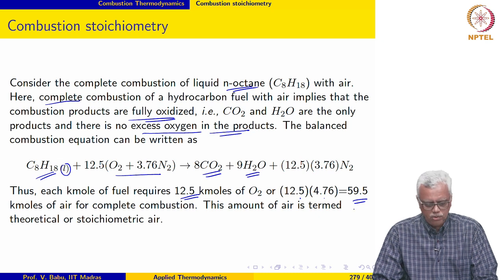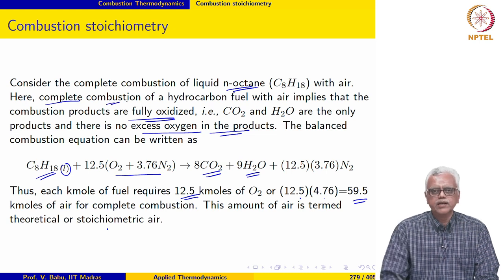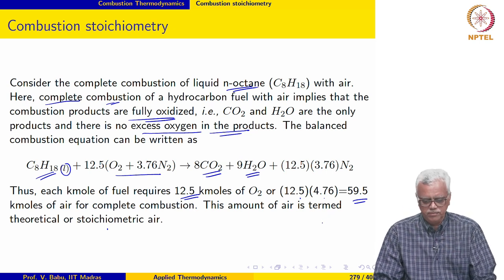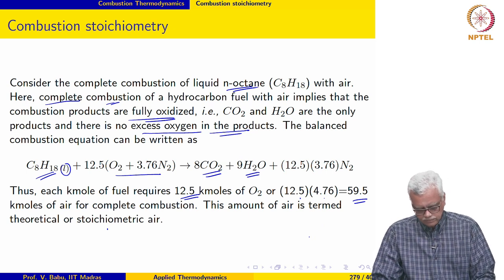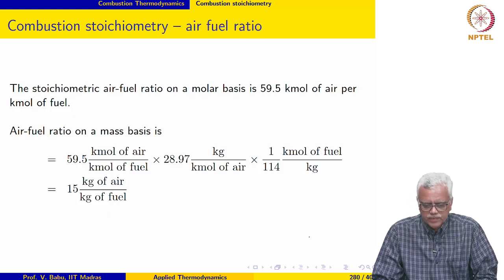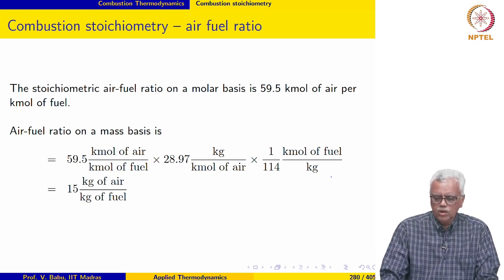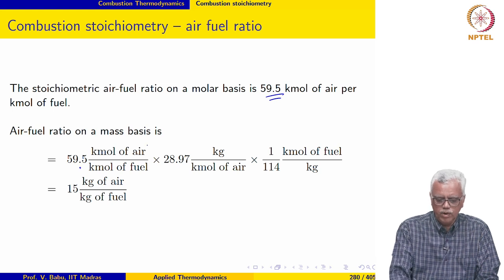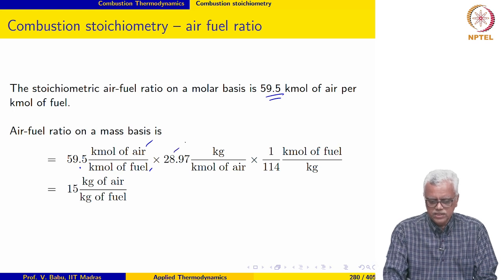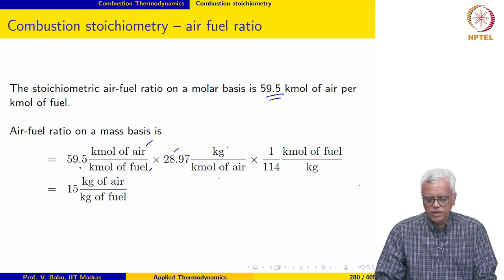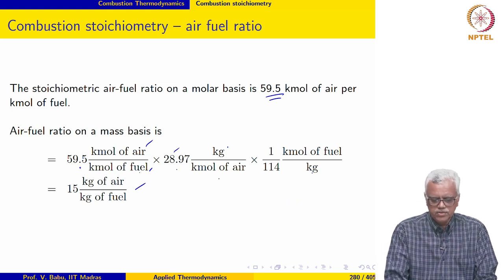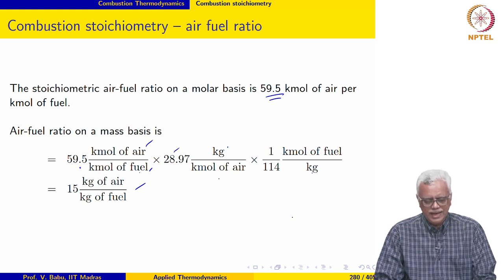The stoichiometric air-fuel ratio on a molar basis is 59.5 kilomoles of air per kilomole of fuel. On a mass basis, this is 59.5 × 28.97 kg/kmol of air divided by 114 kg/kmol of n-octane, which gives an air-fuel ratio of 15 kilograms of air per kilogram of fuel.